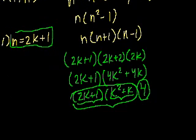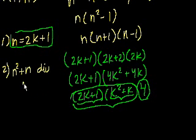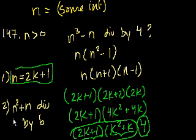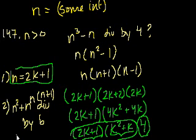Statement 2 tells us n squared plus n is divisible by 6. Factoring, that's n times (n plus 1) is divisible by 6. That's interesting — it tells us this part is divisible by 6. Now n times (n+1) times (n-1) is the full expression we care about. If n equals 2, then n plus 1 is 3 and their product is 6, which is divisible by 6.